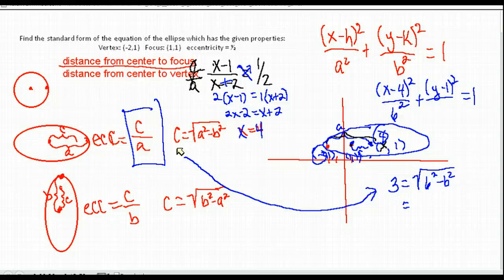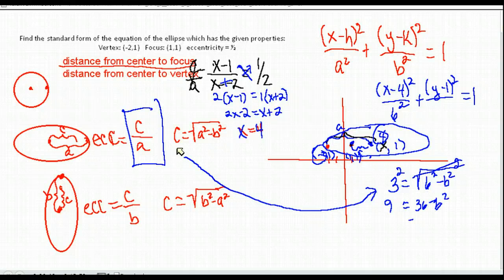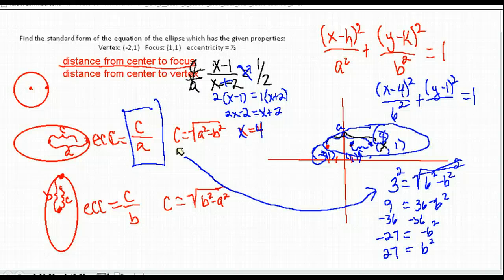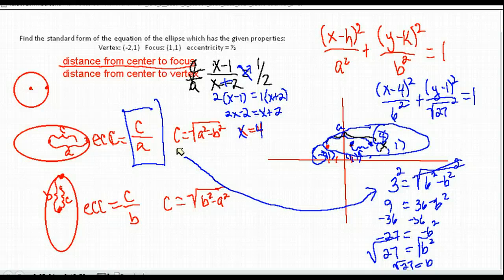Squaring both sides to remove the radical: 9 = 36 − B². Subtracting 36 from both sides gives −B² = −27, so B² = 27, meaning B equals the square root of 27.